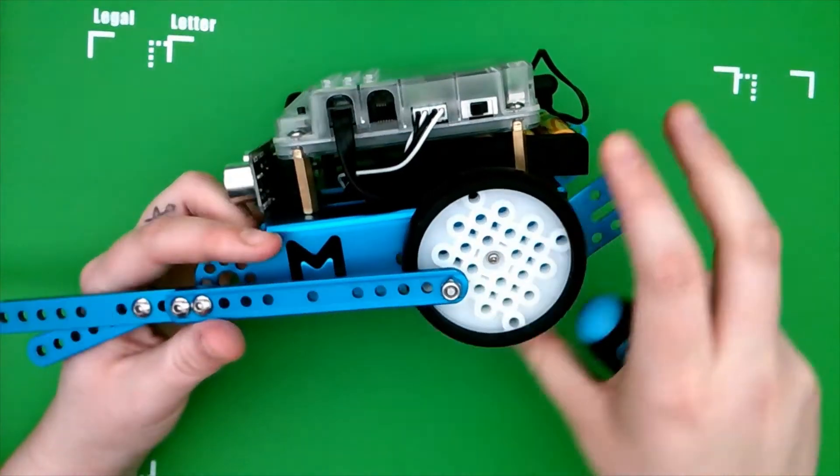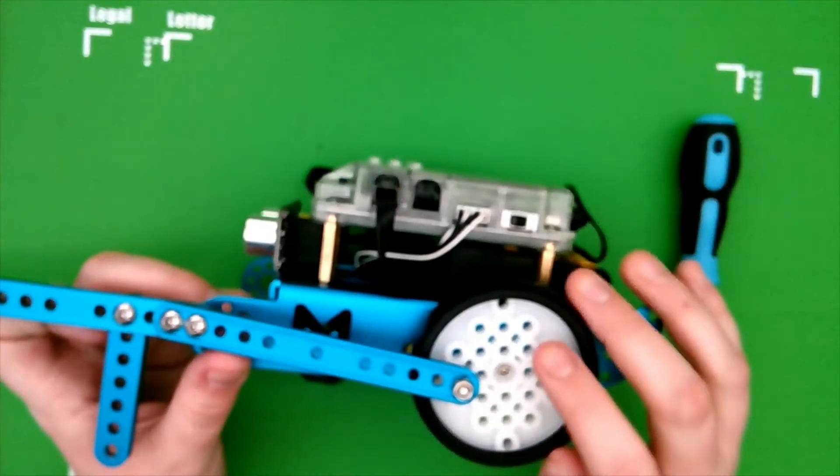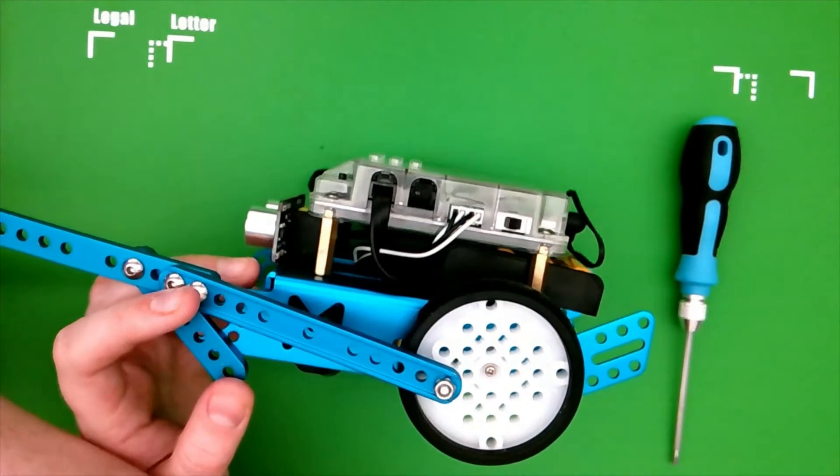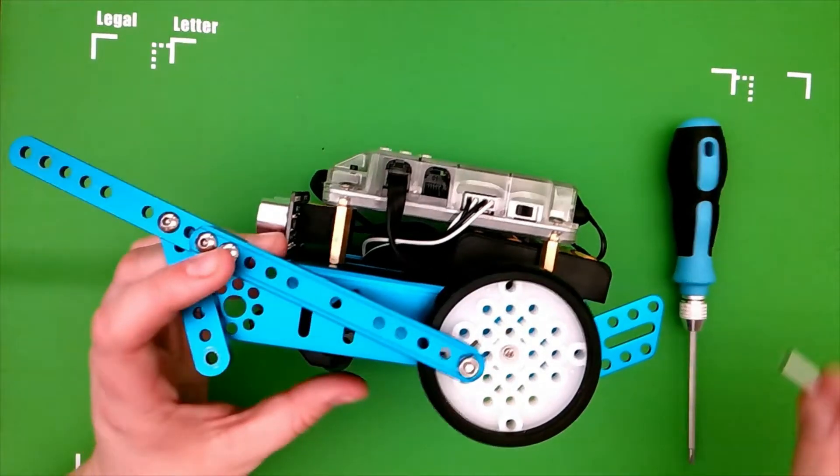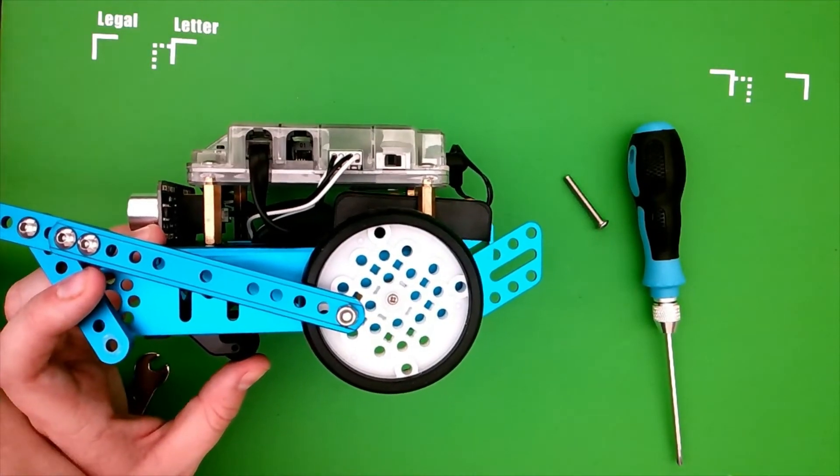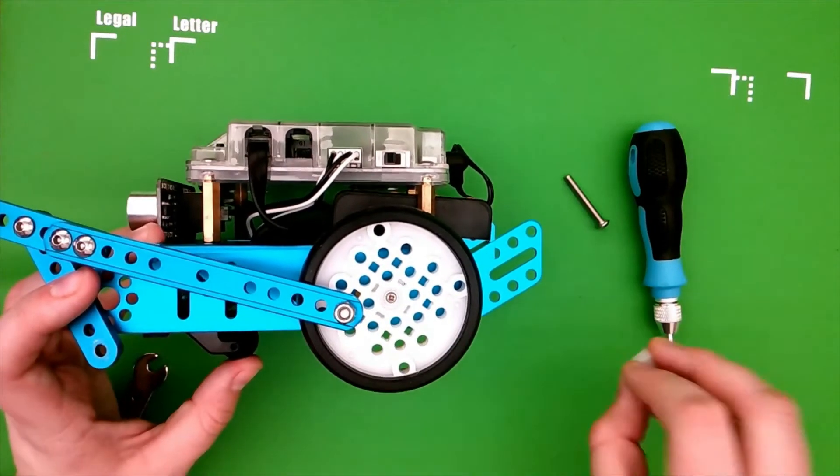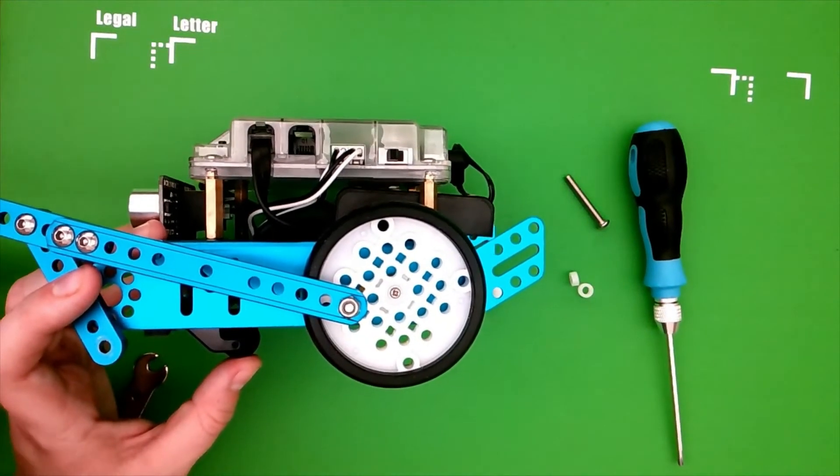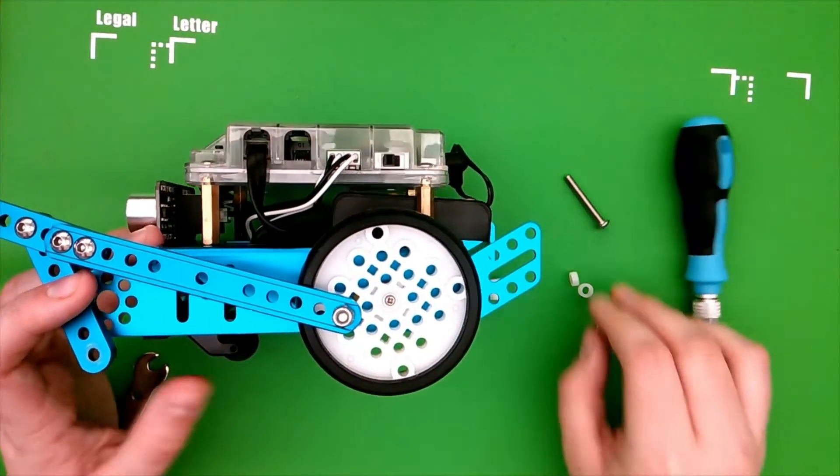Just like that. Okay, and then you're going to take a 30-millimeter screw, two little spacers, a big spacer, and another lock nut.